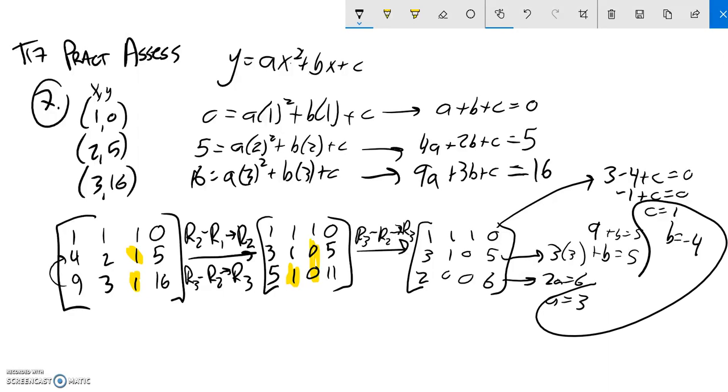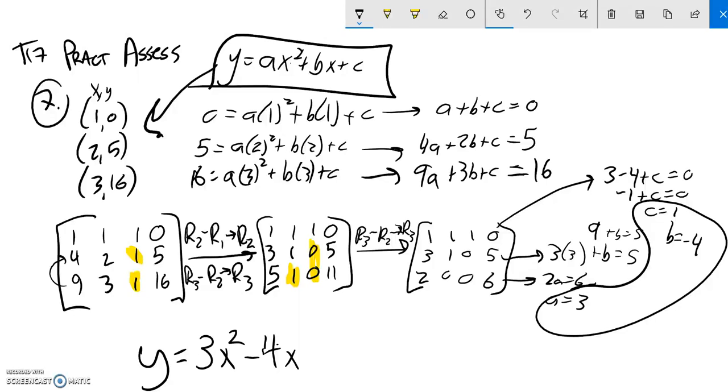So there's my a, b, and c values. But I'm not done because, remember, I'm trying to find the equation that goes through those points. So my equation is y is a is 3, 3x squared, b is negative 4, minus 4x, and c is 1 plus 1.